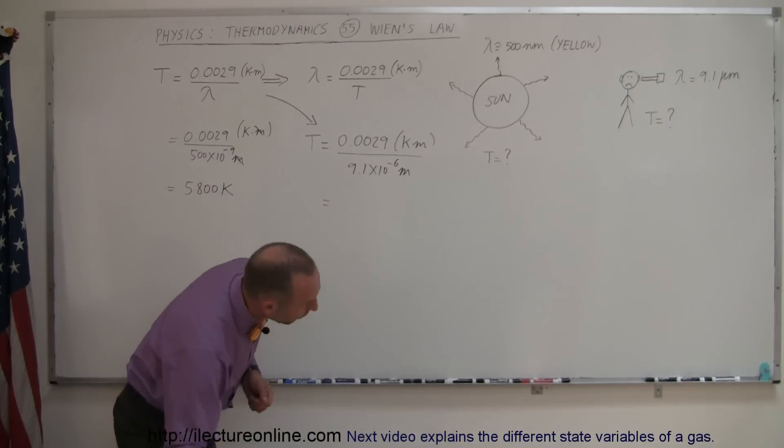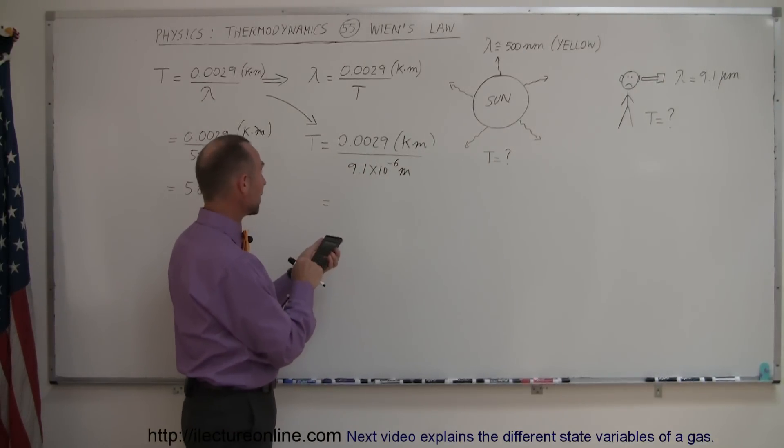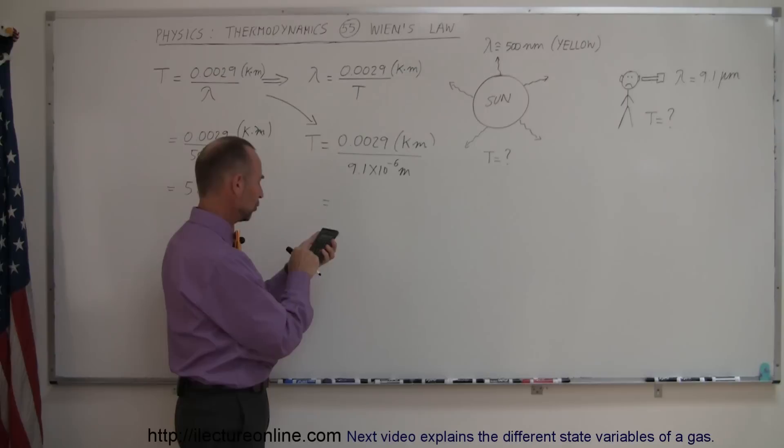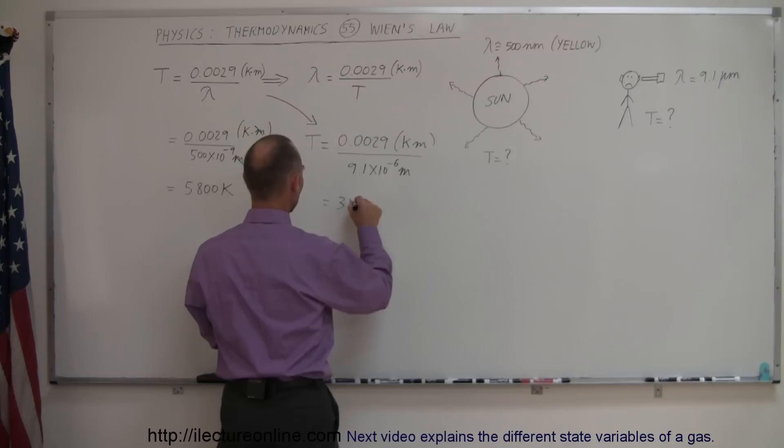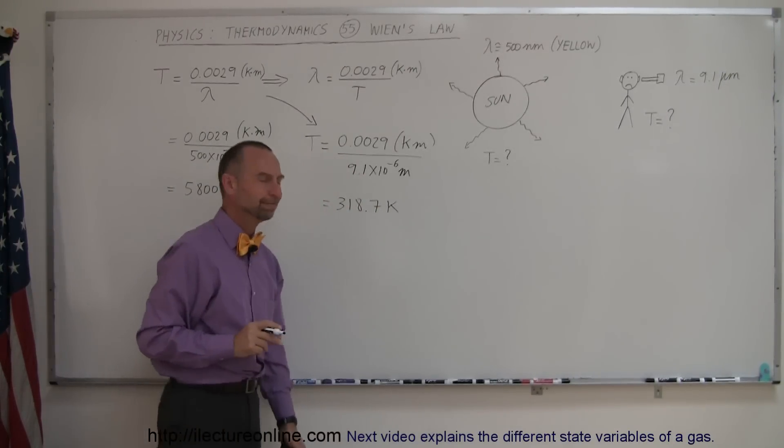And I don't have that memorized so let's figure out what would that be. 0.0029 divided by 9.1 e to the minus 6 equals. And so doctor says you have a temperature of 318.7 Kelvin.